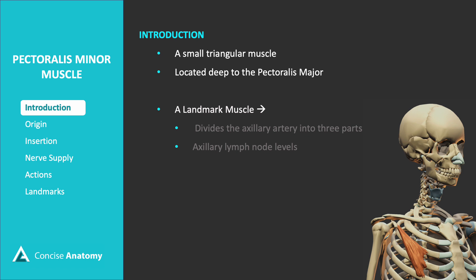Though often overlooked in terms of its function, the pectoralis minor serves as a crucial landmark muscle. It divides the axillary artery into three parts and assists in defining axillary lymph node levels, making it essential for anatomical orientation in the axilla.